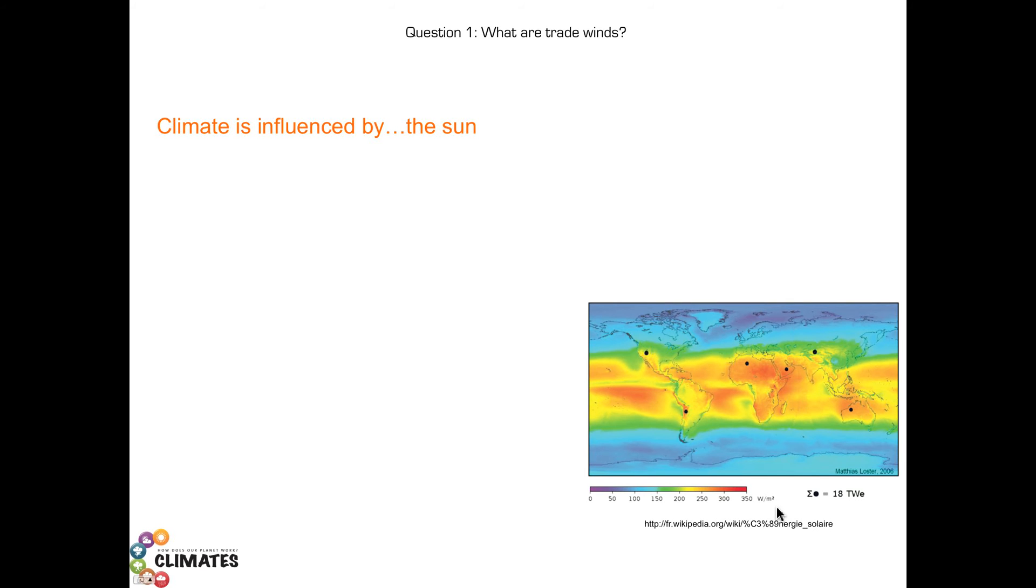The equator receives the largest values, expressed here in orange to red colors. Blue to violet colors, meaning the lowest values are indeed observed in polar regions.